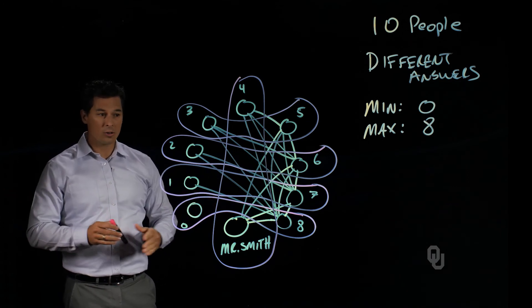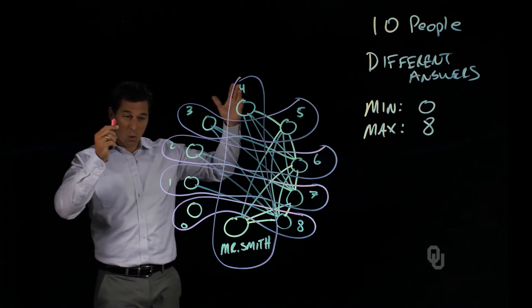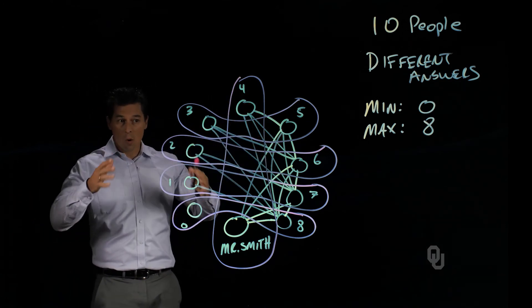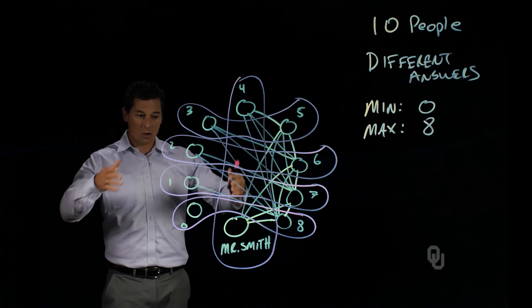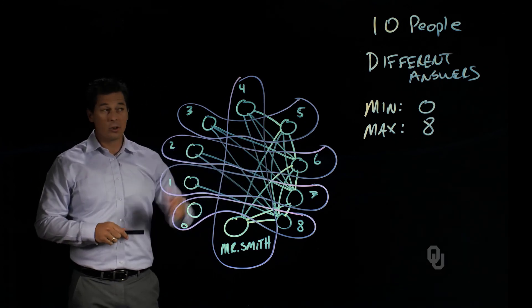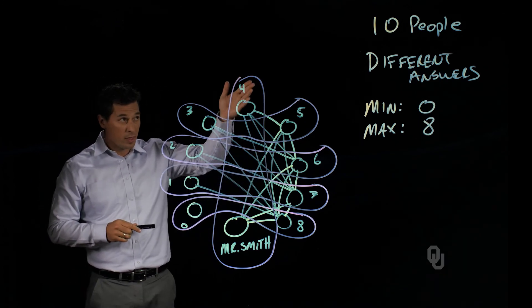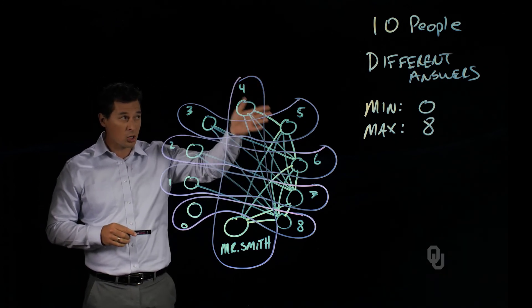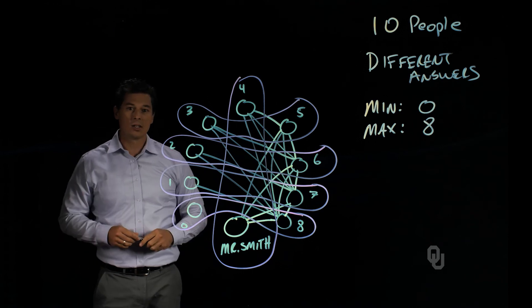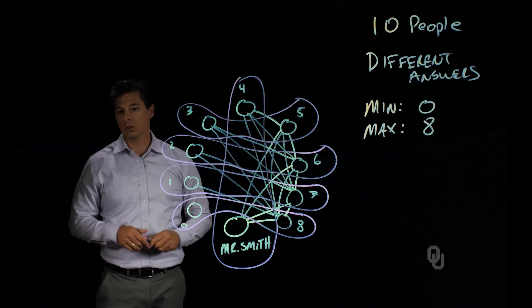Taking a seemingly weird problem and formulating it as a model, visualizing the problem, and understanding the constraints and parameters of the model allow us to solve some pretty interesting problems.